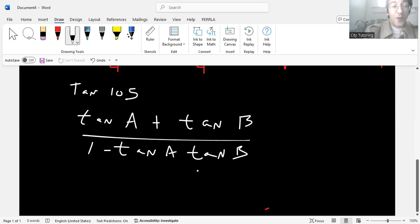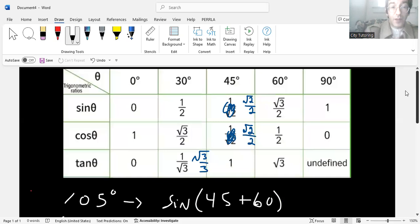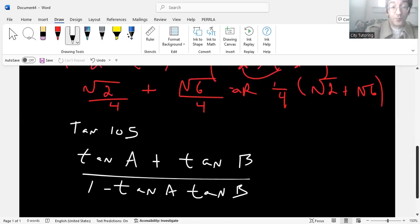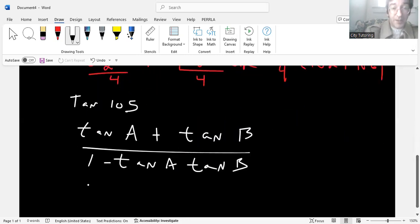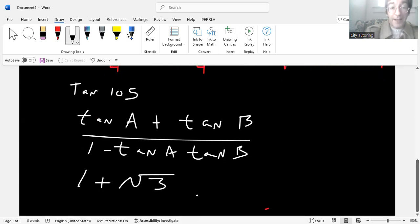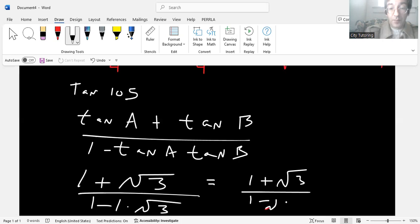The tangent formula is you take the tangent of A, you add the tangent of B, and you're going to divide that by one minus the tangent of A times the tangent of B. So we said that the values were 45 and 60. The tangent of 45 degrees, according to the table, is one. So we now have one plus radical three divided by one minus one times radical three, which gives us one plus radical three divided by one minus radical three. Now, when you have something like this, you have to do something called rationalize.